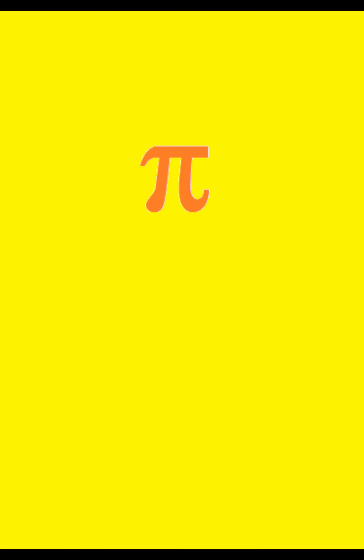The ancient Babylonians and Egyptians had approximations of pi, with the Babylonians using three and an eighth (3.125) and the Egyptians using a fraction that approximates to about 3.1605, as early as 2000 BCE.